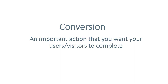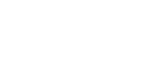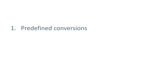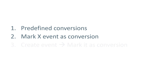In this video, I will talk about three types of conversions that can be configured or tracked in Google Analytics 4. The first one is predefined conversions — if a certain event is sent to GA4, it will automatically be considered a conversion. Another option is to mark a particular event as a conversion in the conversions list under the configuration tab. And sometimes you want to track a conversion only if a particular parameter of the event meets your criteria, which is where the create event feature becomes useful.